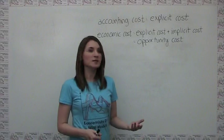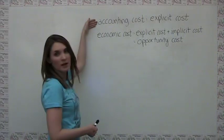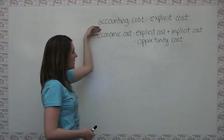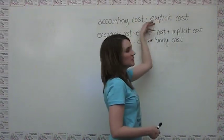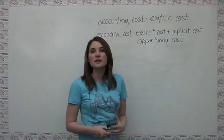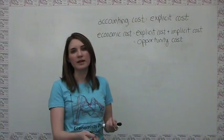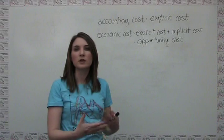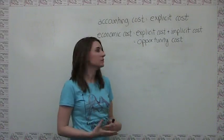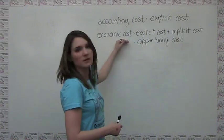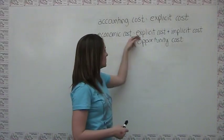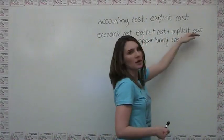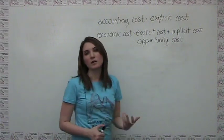We can set up a contrast here between what I'll call accounting costs and economic costs. Accounting costs only include these explicit costs, namely those things where you're physically writing a check or handing over cash, putting forth a credit card, in order to get the item. Economic costs, on the other hand, include these same explicit costs, but also the implicit costs of foregone alternatives.